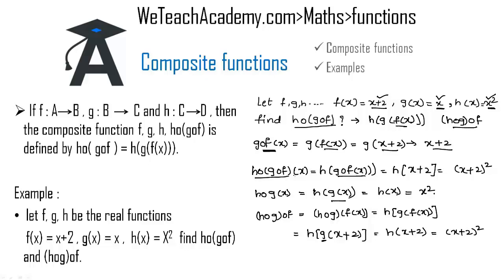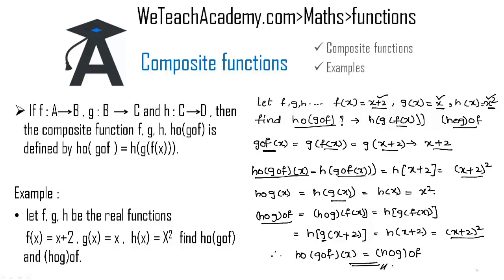By this we observe that h∘g∘f(x) and h∘g∘f yield the same result, so we can conclude that h∘g∘f(x) = h∘g∘f. This was a basic introduction to composite functions. Hope you understood the concept — do like and subscribe to vteachacademy.com. Thanks for watching, have a nice day.